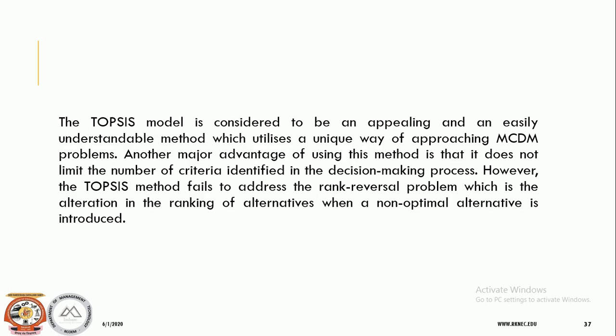The advantages of the TOPSIS method, as listed by Hung and Cheng in 2019: it is simple, rational, and comprehensible in concept. It is very clear and represents the rational of human choice. It is easy for computation with very good computational efficiency — we can implement and visualize this method on a computer. It provides a scalar value that accounts for both the best and worst alternatives and measures the relative performance for each alternative in a simple mathematical form.